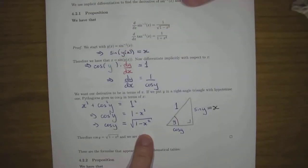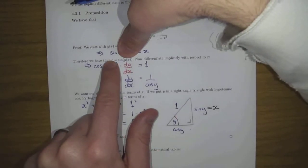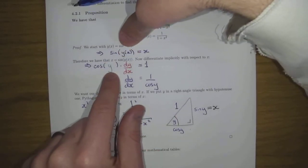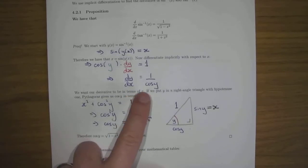The derivative of sine of x is cos of x evaluated at the inside, which is y, times the derivative of what's inside. And the derivative of y of x, all you can say is dy/dx equal to the derivative of x, which is one. Then dy/dx is, divide both sides by cos y, dy/dx is one over cos y.